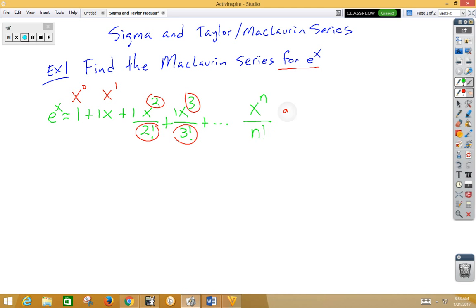So now to write this as a series using sigma notation, we would go sigma starting from 0 to infinity, x to the n over n factorial.